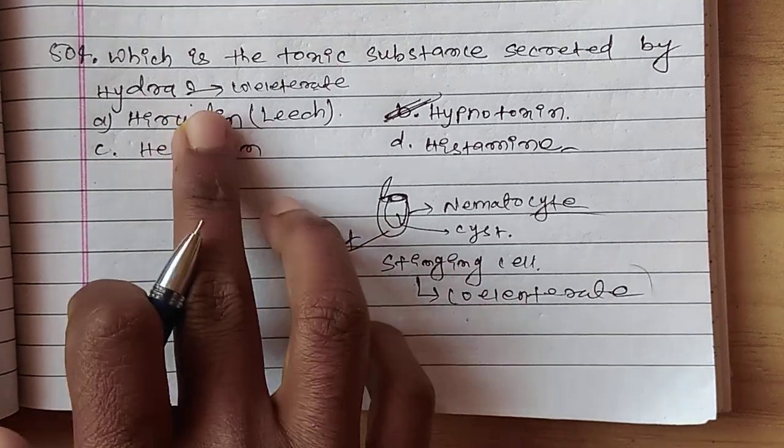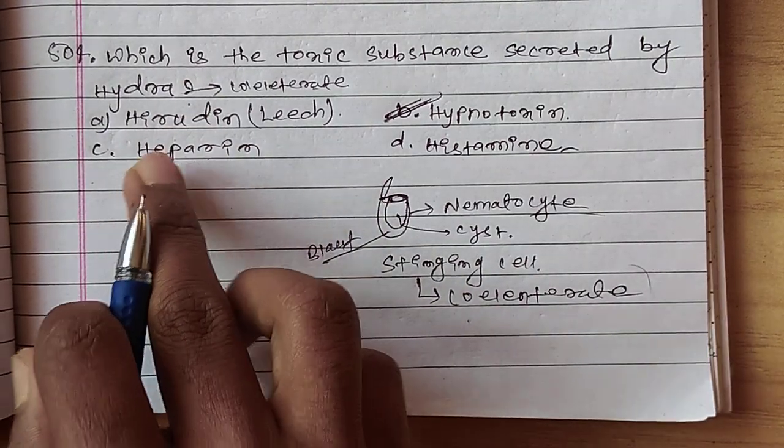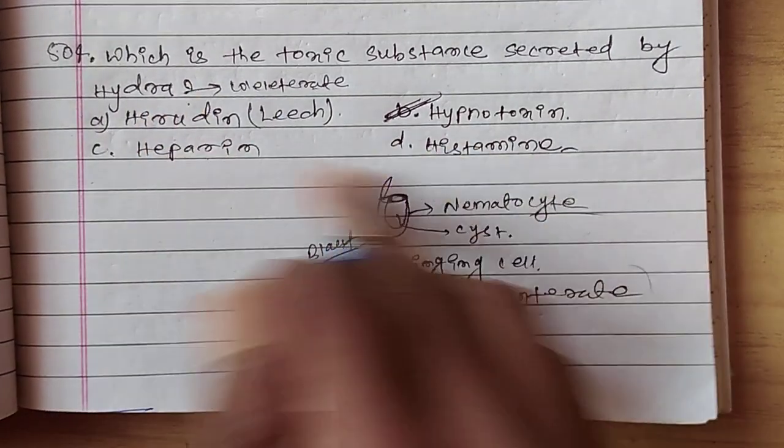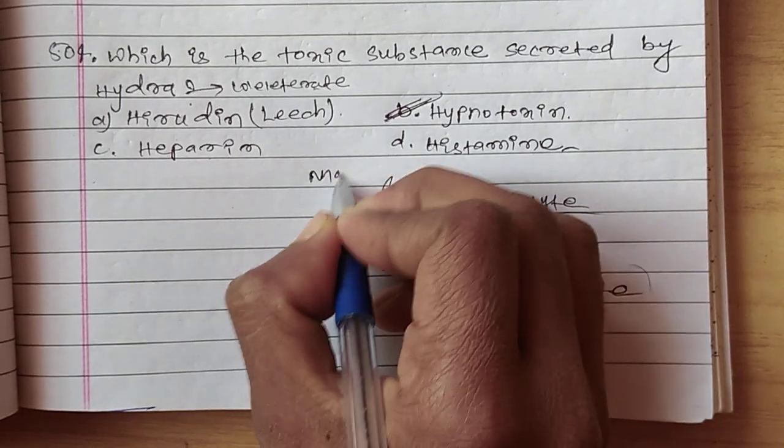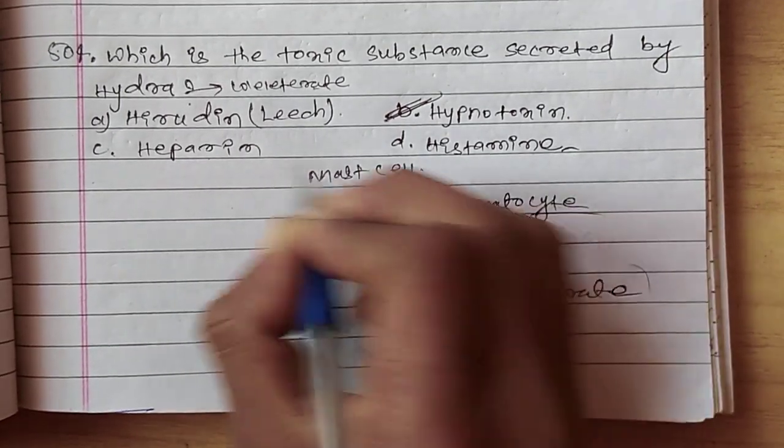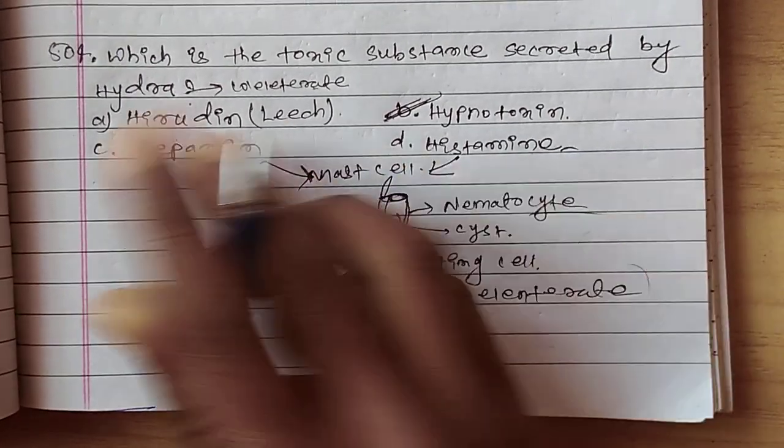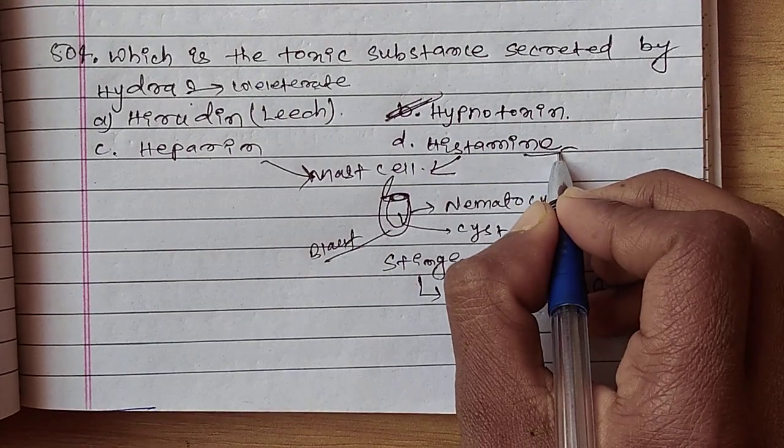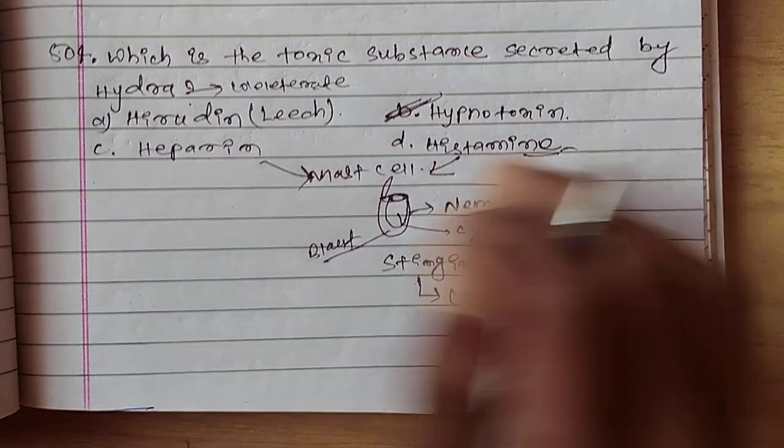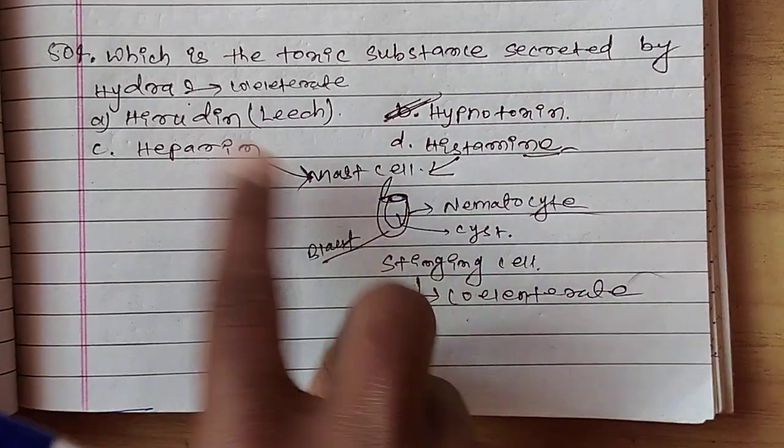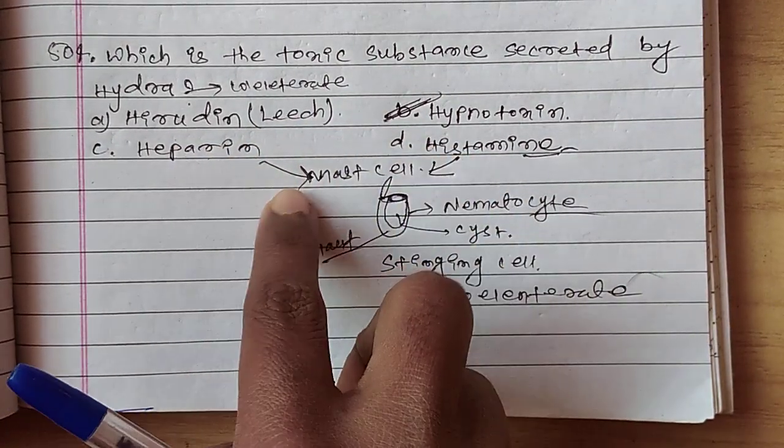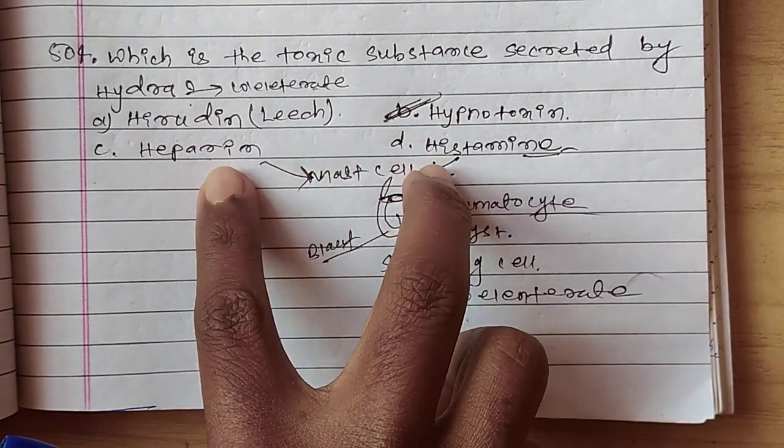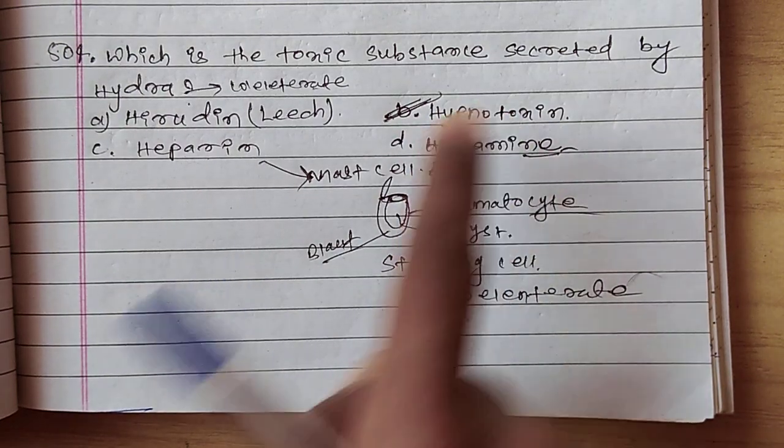Leech le secret garchha yo anti-coagulant ho. Yo substantive muscle le secret garchha. Yo toxic hoina. Yo hypnotoxin toxic ho.